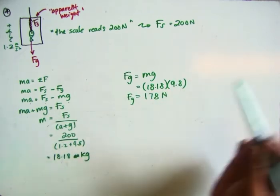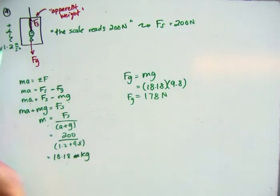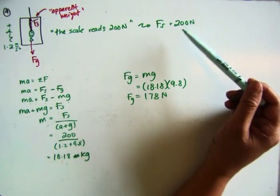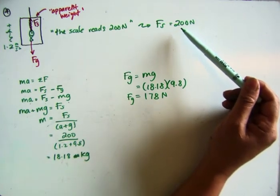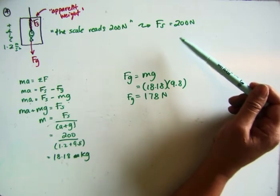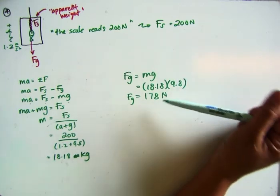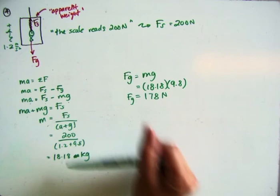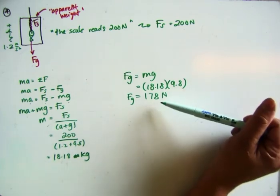So what they're saying is, in this accelerating elevator, the scale seems to want to say the fish has a weight of 200 newtons. But that's because the elevator is accelerating up making the fish seem heavier than it is. When in actual fact, given the physics, the fish is actually 178 newtons.